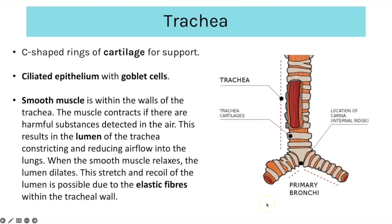There is also smooth muscle within the walls of the trachea which can contract if there are harmful substances in the air, causing the lumen to constrict and reduce airflow to the lungs. When the smooth muscle relaxes the lumen dilates, and that stretch and recoil of the lumen is possible because there are also elastic fibres within the tracheal walls.